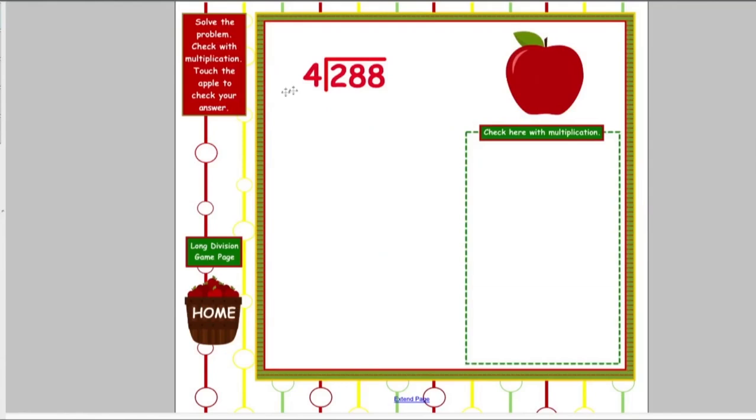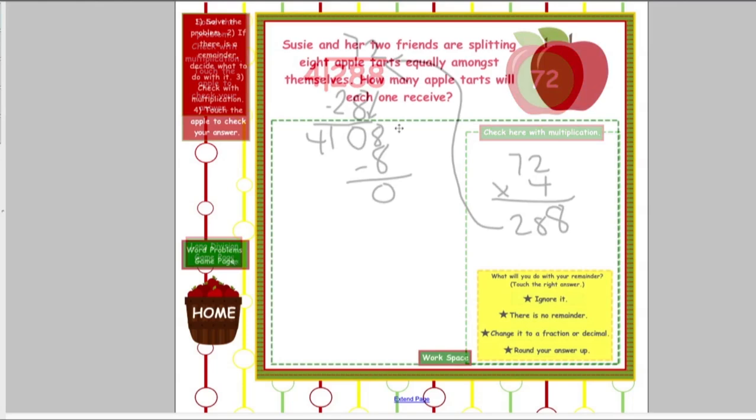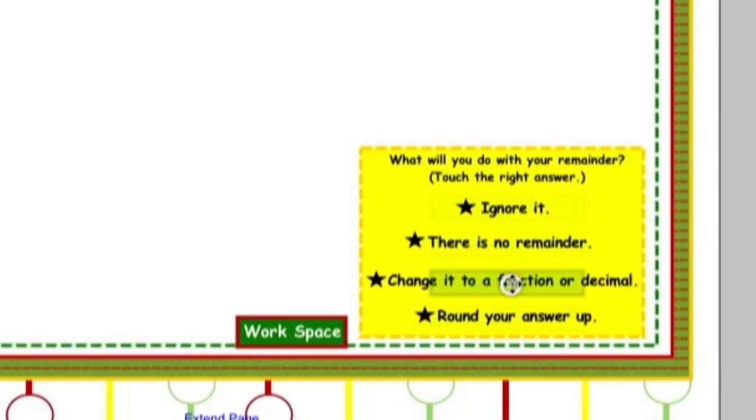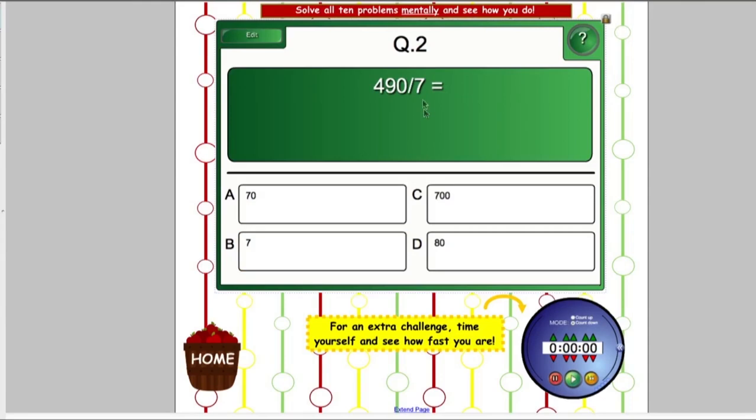The long division game allows students to practice division through three games. The first is long division, where students traditionally calculate the problem and solve by checking the multiplication. The second game is word problem long division, where students must also check and decide what they need to do with the remainder. The last game is mental math division, where students can see how fast they can solve the ten mental math division problems.